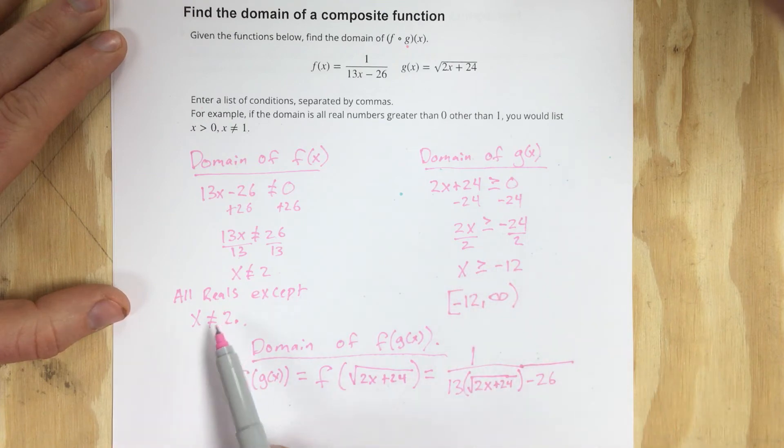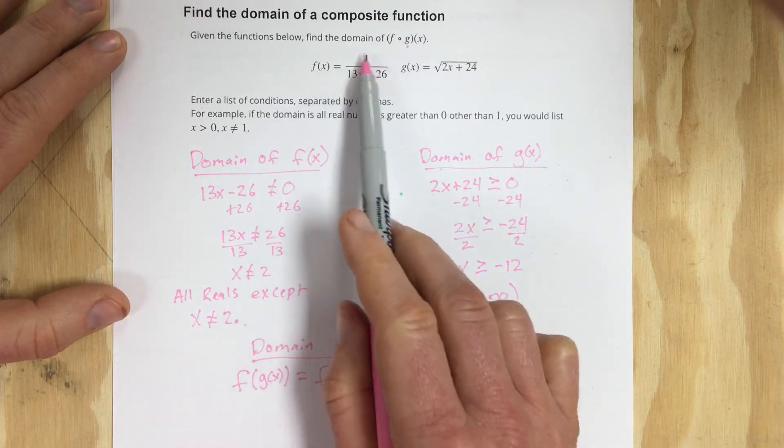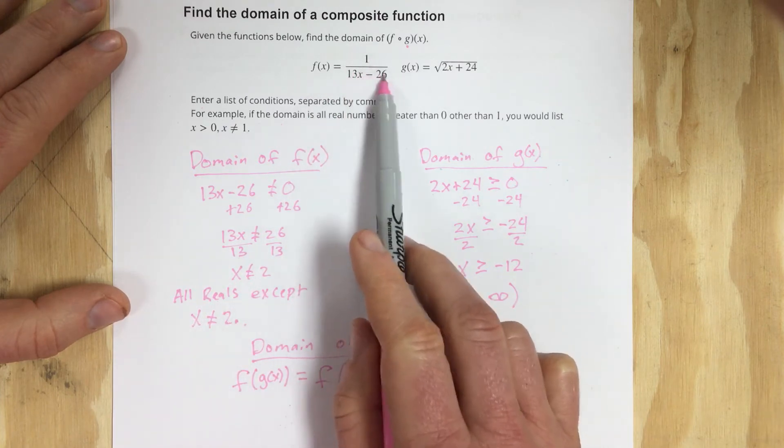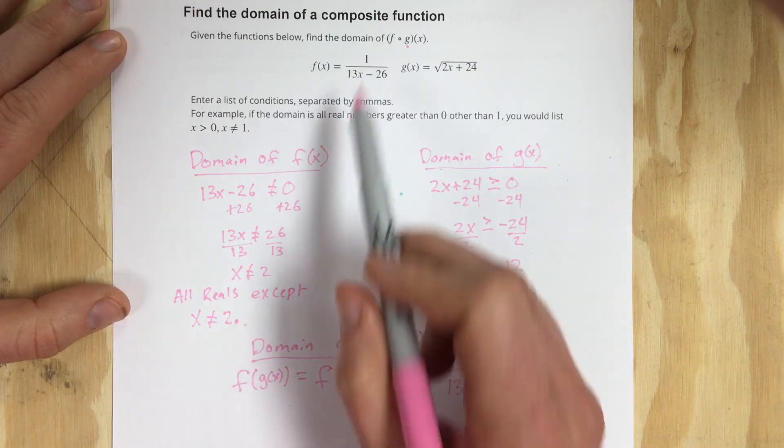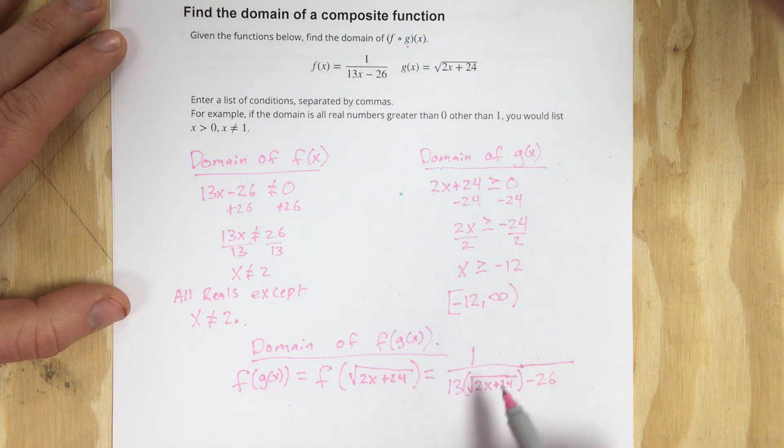But we also know that I'm plugging into this f function and the f cannot be divided by zero. So when I originally found this x cannot equal 2, that was for just a regular x there. But now I put in root 2x plus 24 in replace of x.